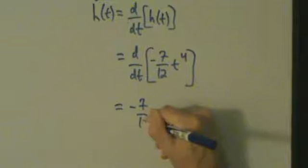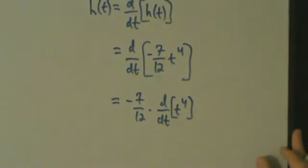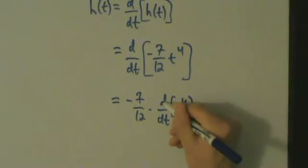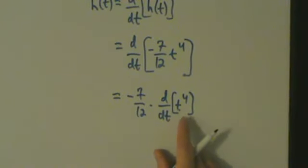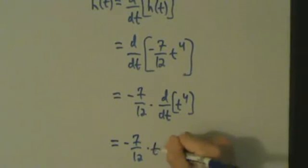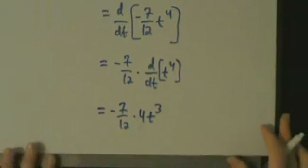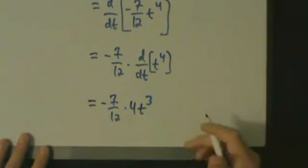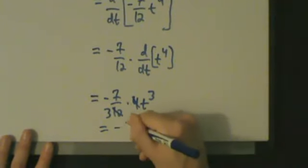So that's going to be -7/12 times d/dt of t⁴. We know that the derivative of t⁴ with respect to t is 4t³. So this is going to be -7/12 times 4t³. Now let's simplify: 4 cancels with the 12, leaving 3 on the bottom. So this is actually -7/3 times t³. So -7/3 · t³ is the first derivative, ḣ.